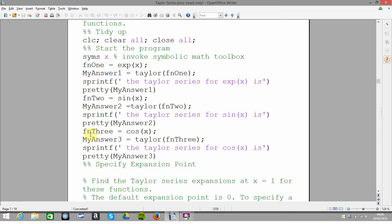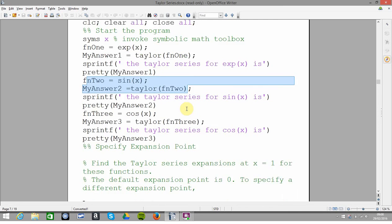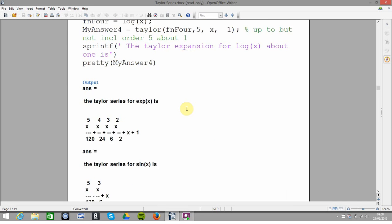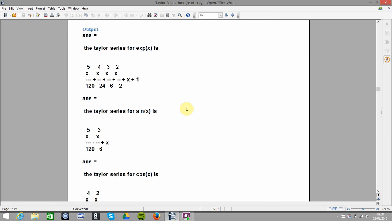Likewise for here, the next one, there's sin(x), and I got the Taylor, and I've given it no argument, so when I go down here, for sin(x), it gives me up to x to the 5, and it assumes it's going about 0.